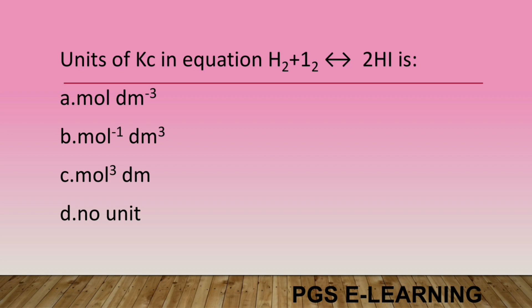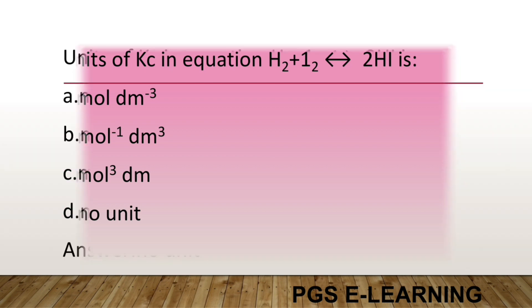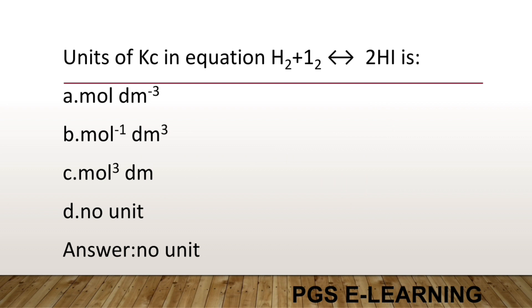The unit of Kc for the equilibrium reaction H2 + I2 → 2HI is: Option A, mole per decimeter cube. Option B, per mole decimeter cube. Option C, mole cube decimeter. Option D, no units. Correct answer is no unit.